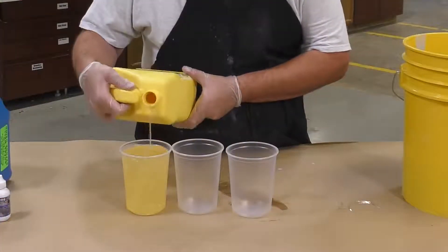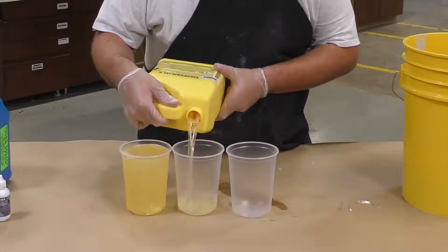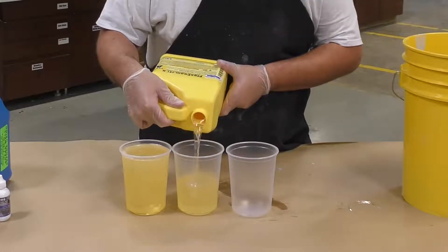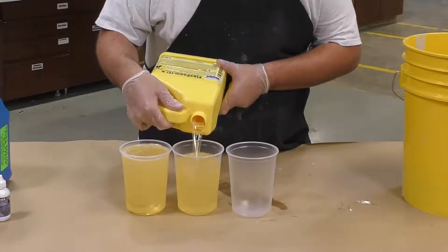Now that we've combined all the part B's into our five gallon mixing container, I can go ahead and dispense the part A.